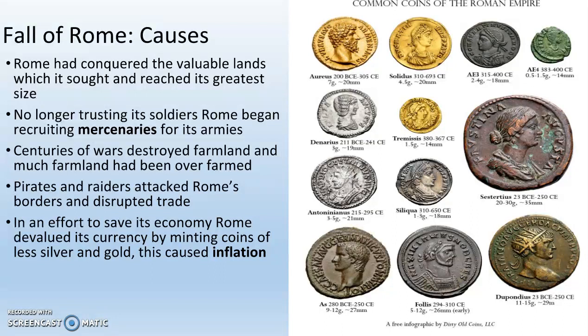The second big cause: centuries of war had destroyed farmland. Much of the farmland had been overfarmed, and they hadn't invented things like crop rotation to keep nutrients in the soil. Pirates and raiders were constantly attacking Rome's borders, disrupting trade. And finally, in an effort to save its economy, Rome devalued its currency by minting coins of less and less silver and gold. This caused inflation — inflation is when you have too much money chasing not enough goods — which is a major cause, along with mercenaries, of the collapse of the Roman Empire.